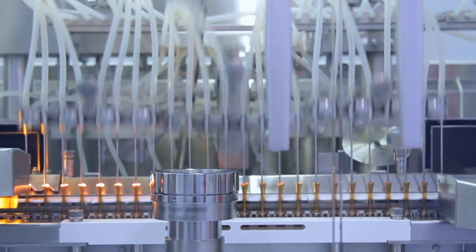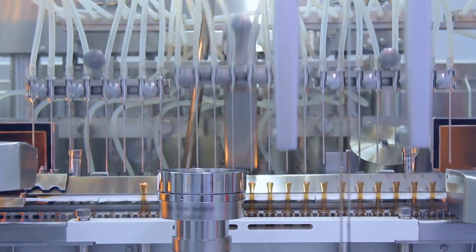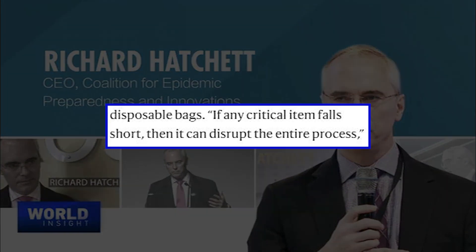This is why supply lines got impaired when the pandemic began. Richard Hatchett, chief executive of the Coalition for Epidemic Preparedness Innovation, said if any critical item falls short, then it can disrupt the entire process.